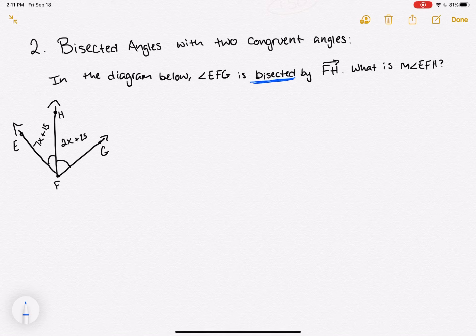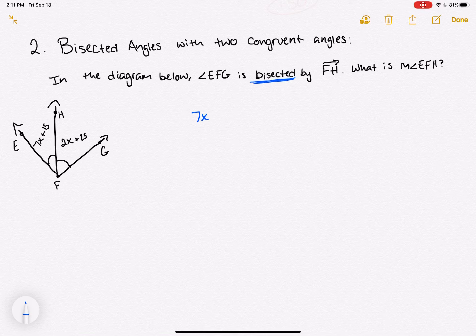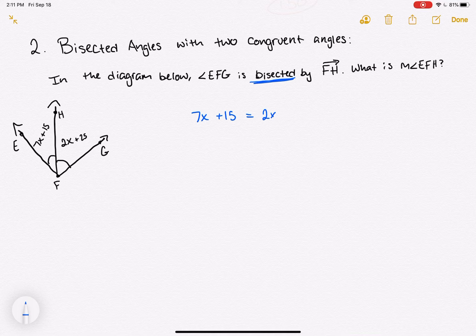First we need to solve for that missing piece, that x that's in our angle measures. So we have 7x plus 15 and I'm going to set that equal to 2x plus 25. And I can set them equal to each other because they're congruent.